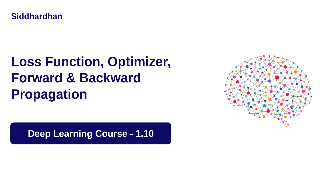Hello everyone, I am Siddhartha. Currently we are in the first module of our deep learning course, discussing the basics of deep learning and neural networks. In the previous videos we covered activation functions, the math behind them, and how to calculate activation function values in Python. In today's video we are going to discuss the three main aspects of training a neural network: loss function, optimizer, and forward and backward propagation. If you like my channel, please subscribe and share it. Let's get started.